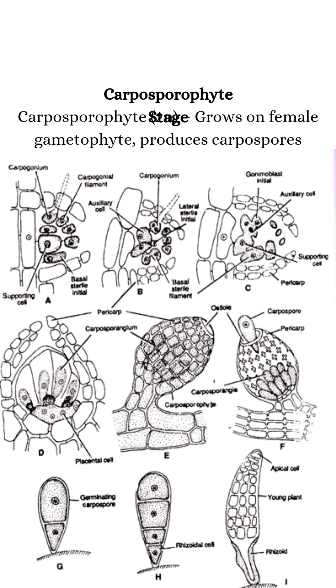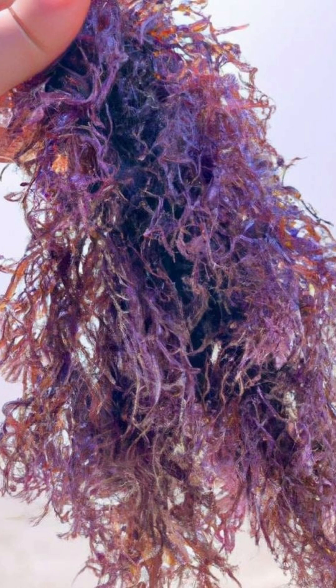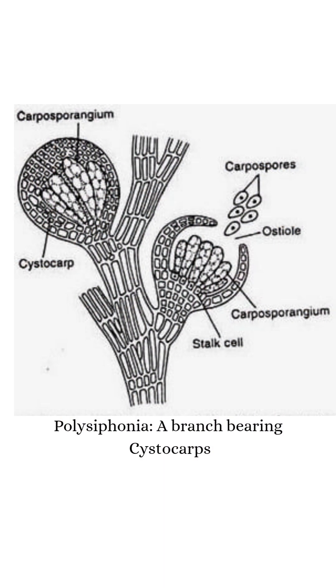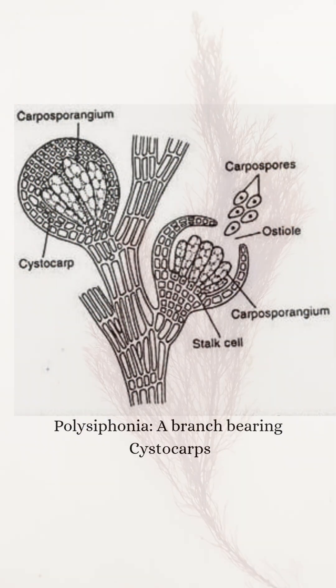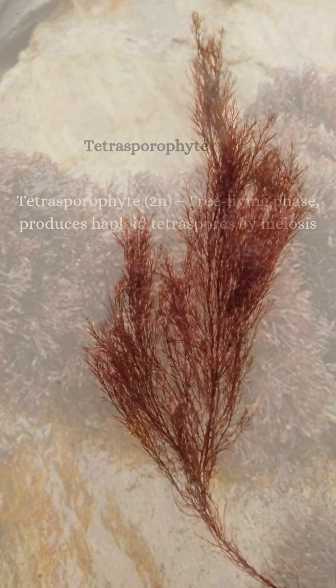In the carposporophyte stage, the fertilized zygote doesn't develop into a new plant. Instead, it forms a diploid carposporophyte which stays attached to the female gametophyte. This structure produces diploid carpospores, which develop into the next stage.